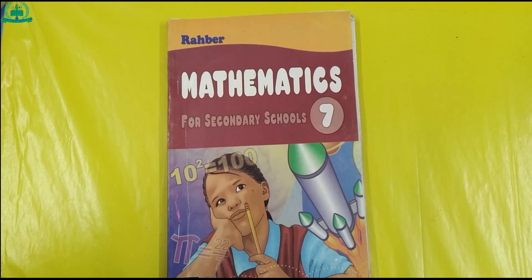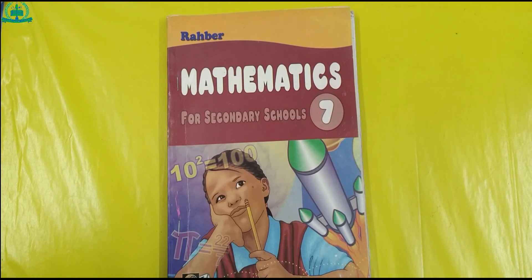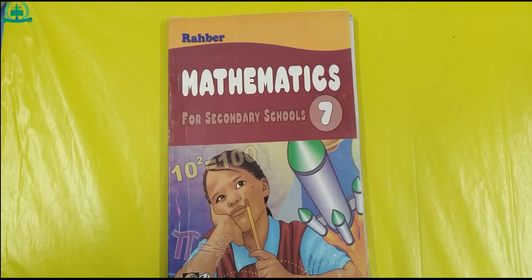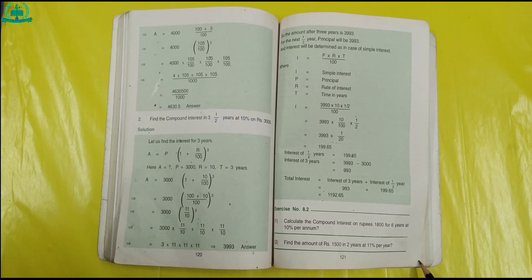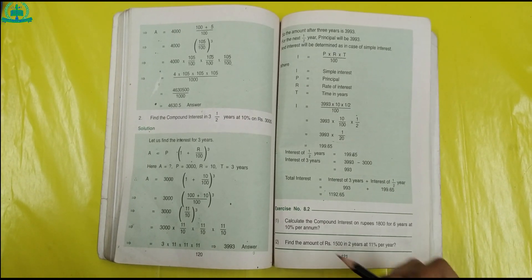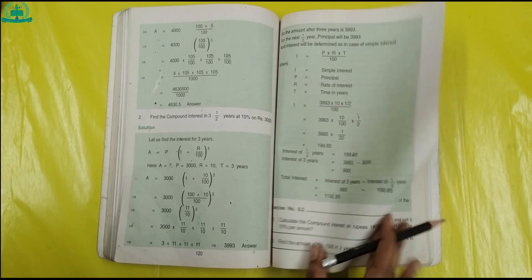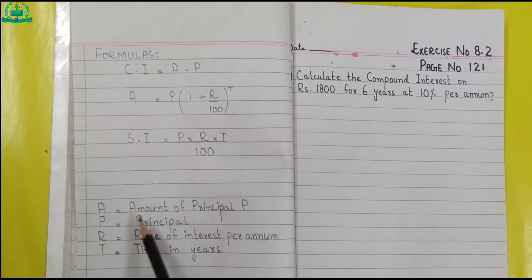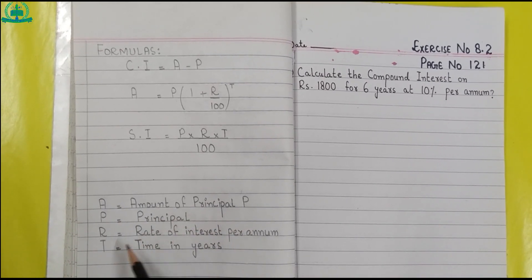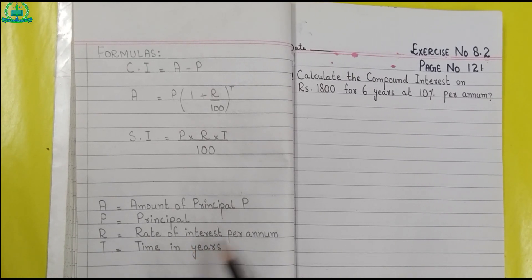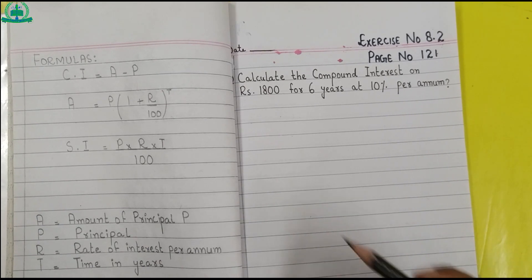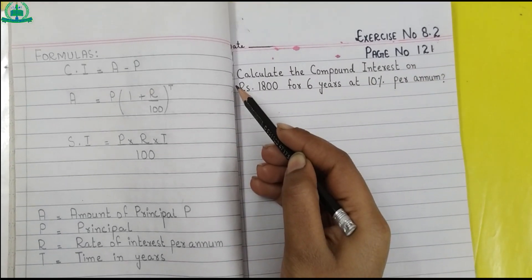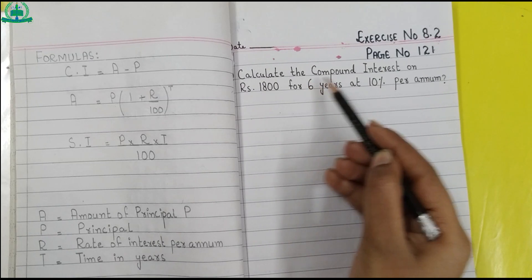Assalamu alaikum dear students, I'm your math teacher for class 7. We have already done exercise 8.1 in the previous lecture. Today I'm going to start exercise 8.2. Open your maths book, page number 121. We will do questions 1, 2, and 3. We are using these formulas: A is amount, P is principal, r is rate of interest per annum, t is time in years. In your math copy, draw a margin line and mention the date, exercise number, and page number.